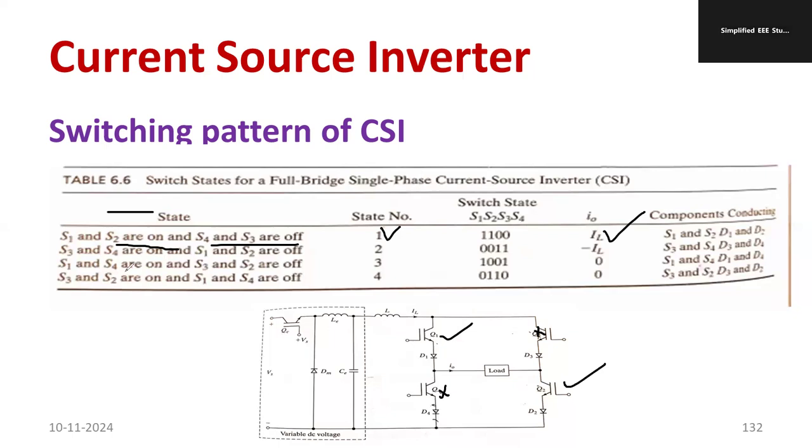Whenever you are turning ON S3 and S4, the second state, you are turning ON S3 and S4 by turning ON Q2 and Q1. At that time, the state will be second. You are getting output 0011. You are getting minus IL. That is the second condition, similar to that of voltage source inverter which I already discussed in my previous session.